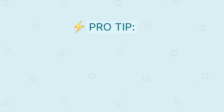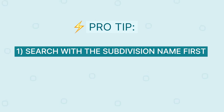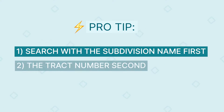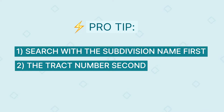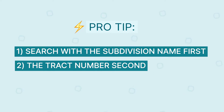Here's a pro tip when comping with subdivisions: search with a subdivision name first and the track number second. If a property in our system has data for the exact subdivision name, it will pull based on that first when you run comps. We recommend comping with the exact subdivision name if you have it to ensure you get the best results.